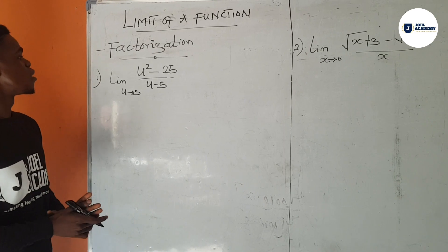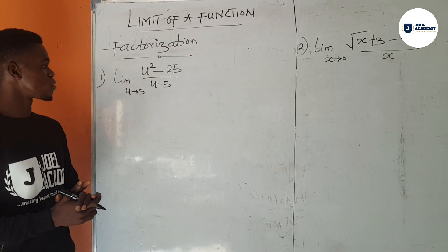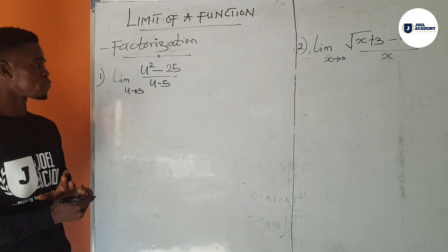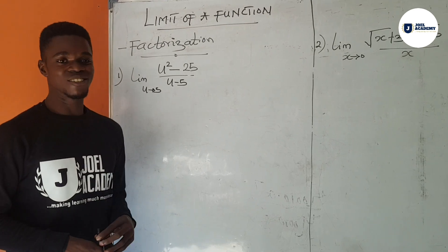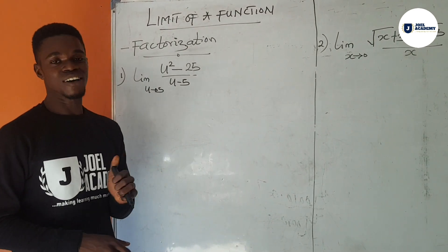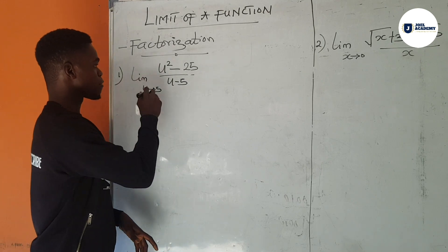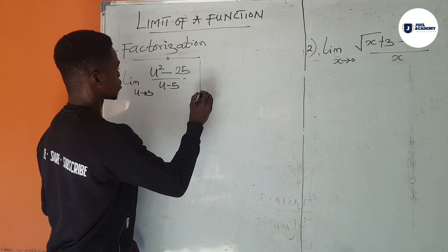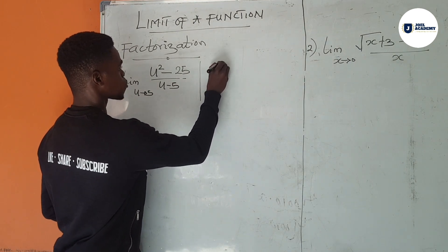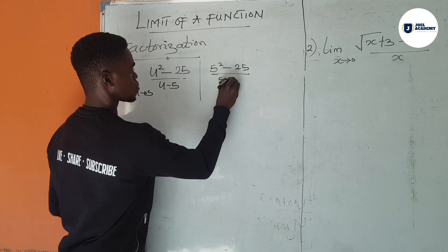We have our first question here, which is the limit of u squared minus 25 over u minus 5 as u tends to 5. We might tell you in the previous video that our solution is not allowed to have undefined as its answer. So if you put in 5 directly into this, we are going to have 5 squared minus 25, 5 minus 5.